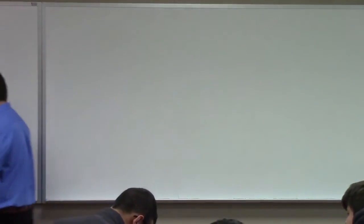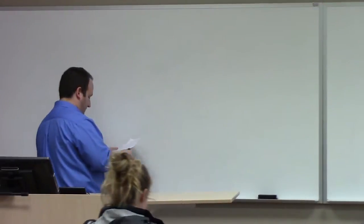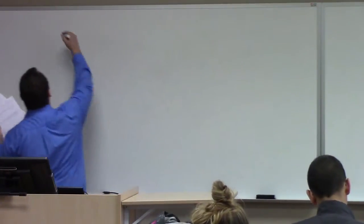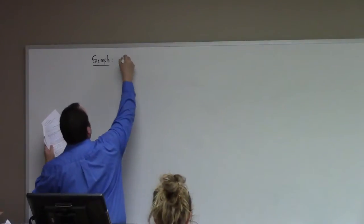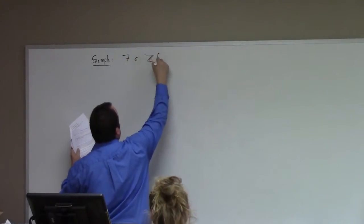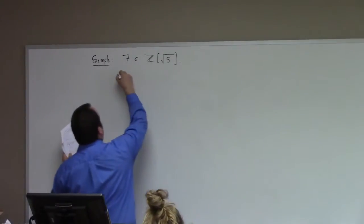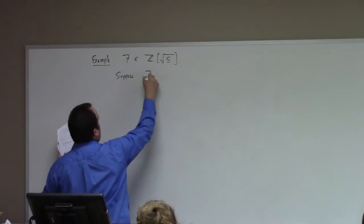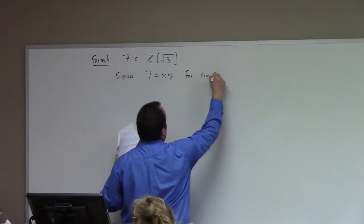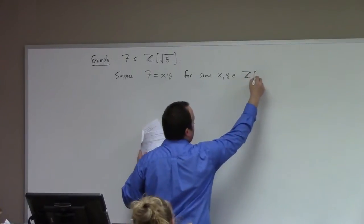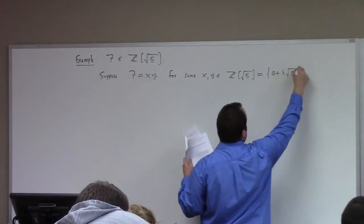So last time I began down the path of chapter 18 in Gallian. Let me just pick up with an example. Consider 7, which is an element of Z adjoin the square root of 5 — not minus 5, but 5. Suppose that 7 is equal to x times y for some x and y in this set. Remember, this notation means a plus b·√5 such that a and b are integers.